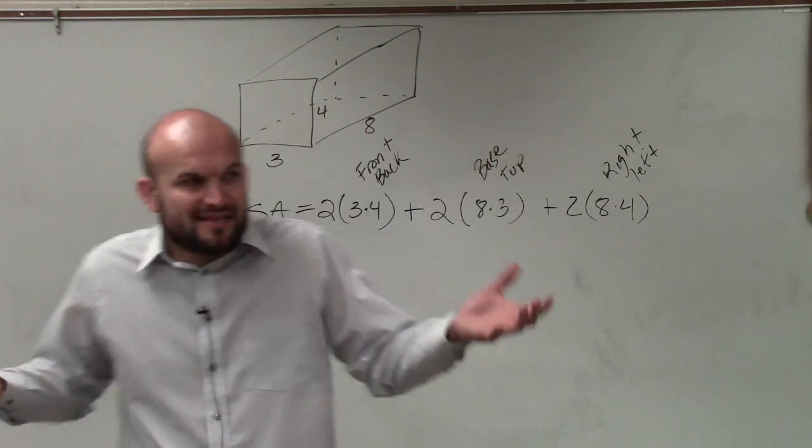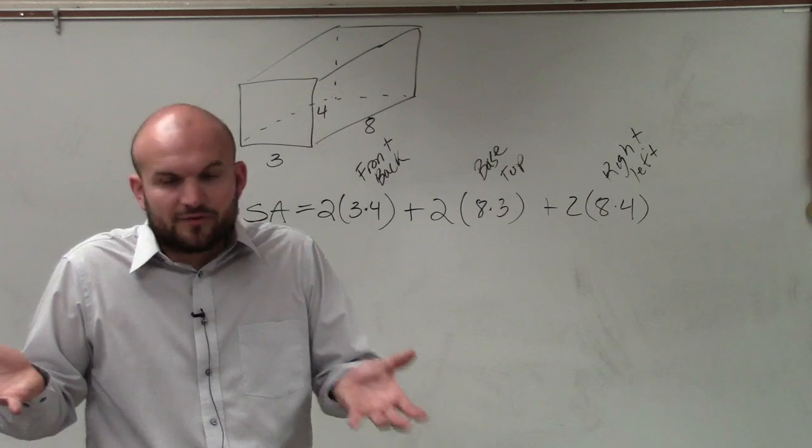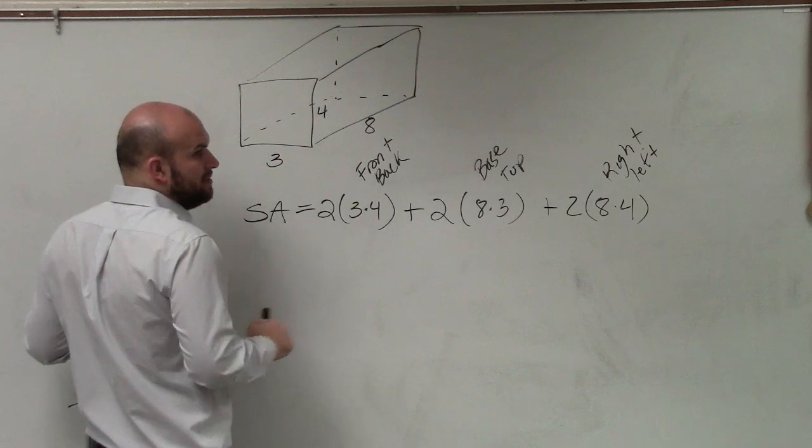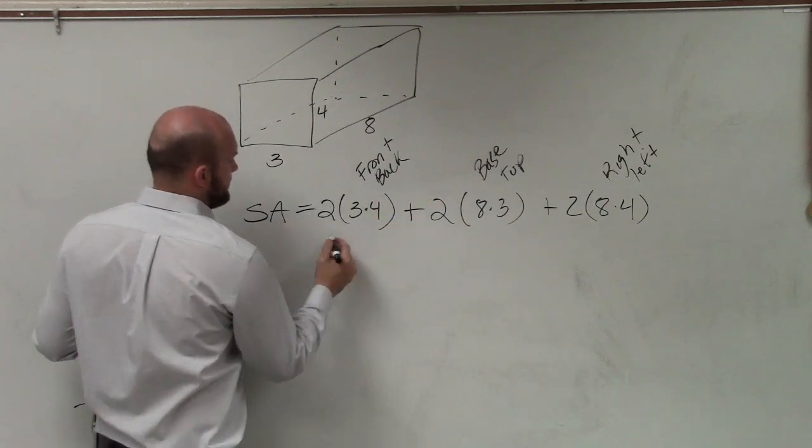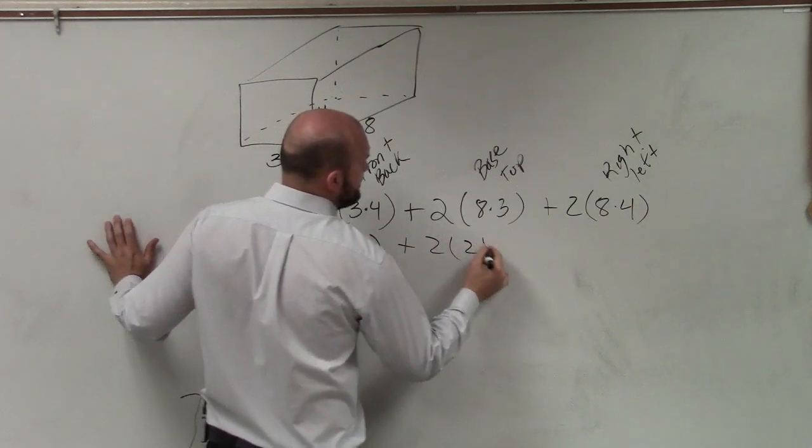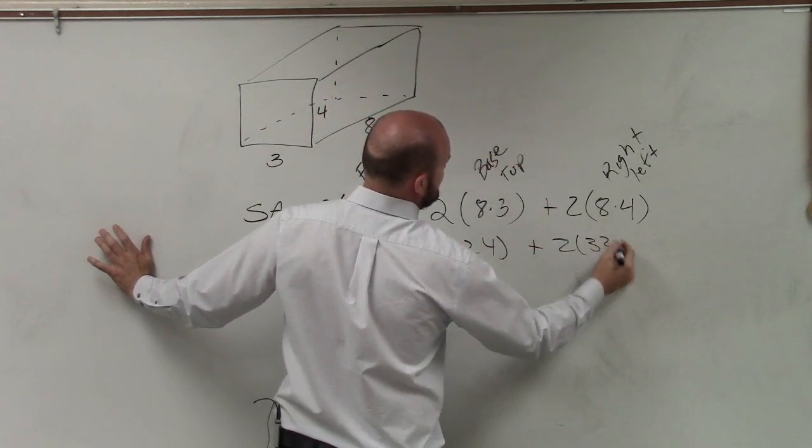So if you guys can just find the areas of sides, of 3 sides, and then you multiply them by 2. Now what I can go ahead and do, you can go back around that way, please.